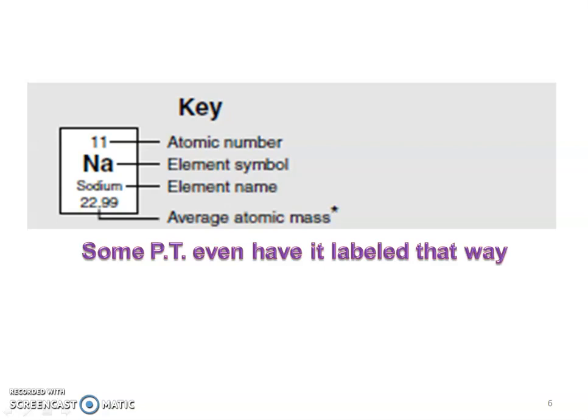So some periodic tables even have them listed as an average atomic mass. Some periodic tables say here's the atomic mass, some say still atomic weight, and then others actually even say average atomic mass.